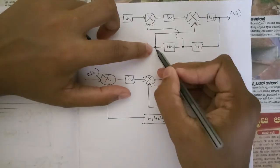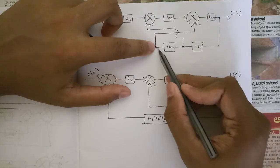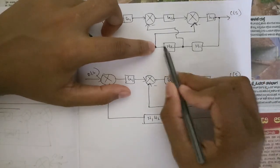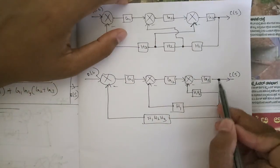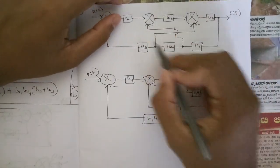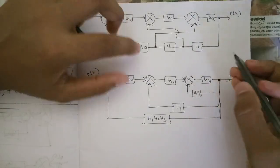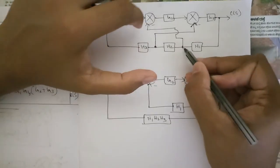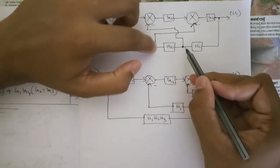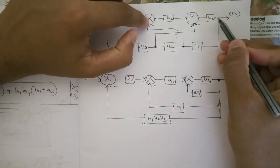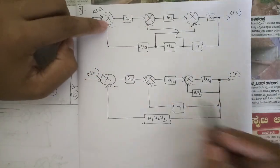Consider only this takeoff point — it is connected to this summing point here. If it is connected here, and if there is no other takeoff point, these two are in series so they get multiplied and it becomes h1·h2, connected to output. Instead of that complex form, I've reduced it to a simpler form. Same goes with this node — this takeoff point is connected to this summing point, and here h1 is directly connected to output, so I've written a block h1 connected here.